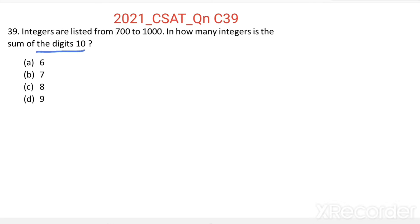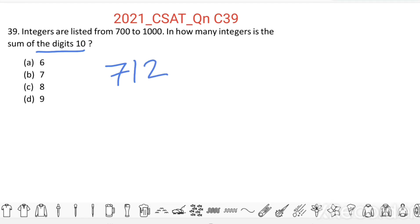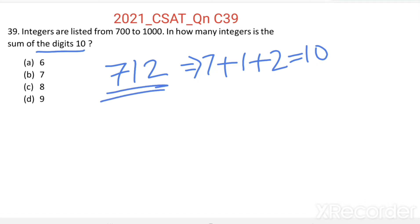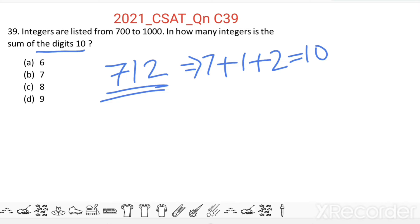Consider one example: 712. This is an integer between 700 and 1000. The sum of its digits equals 7 plus 1 plus 2, which equals 10. So how many such numbers are there between 700 and 1000?